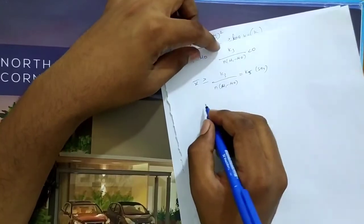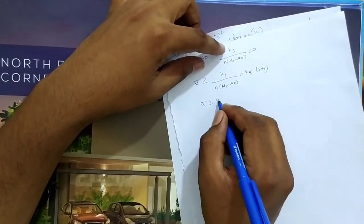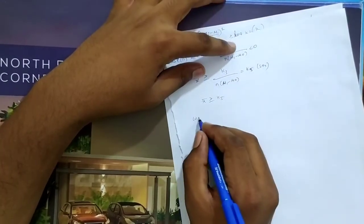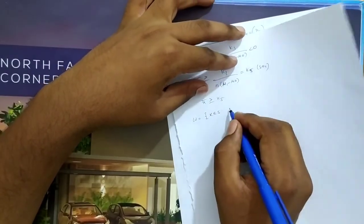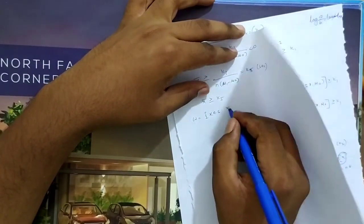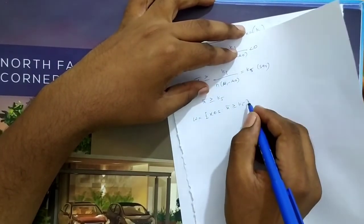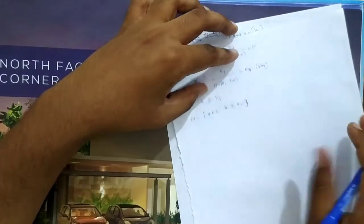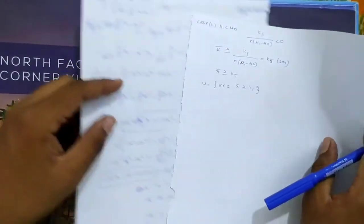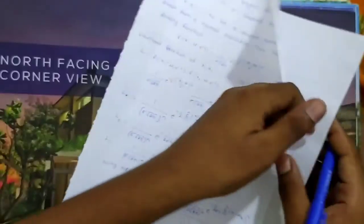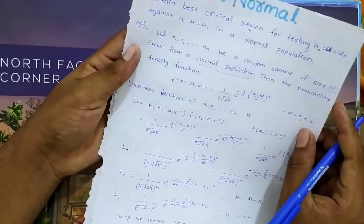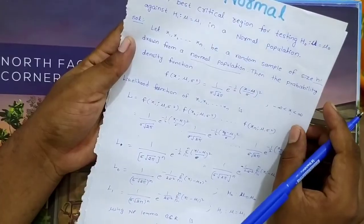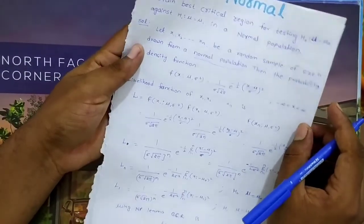So the critical region is W = {x : x̄ ≤ k5}. This is the best critical region for testing H0: μ = μ0 against H1: μ = μ1 for a normal population, obtained using the Neyman-Pearson lemma.